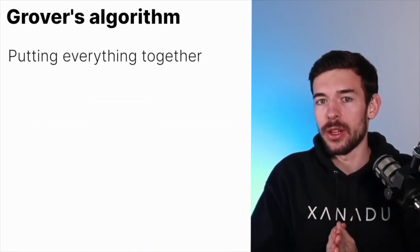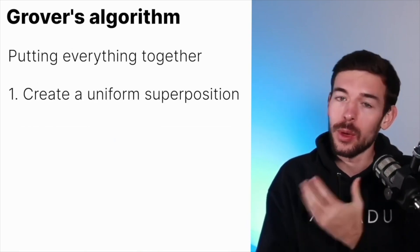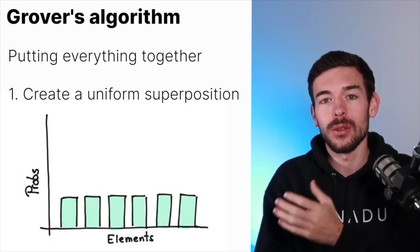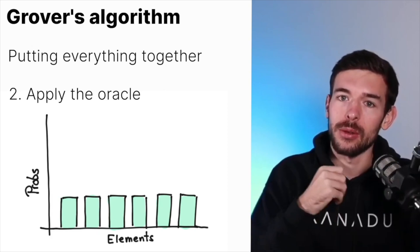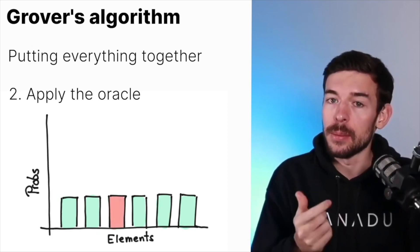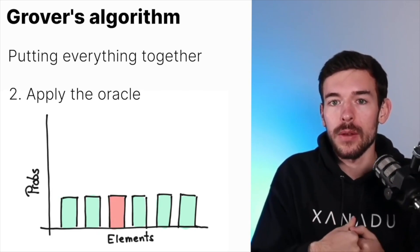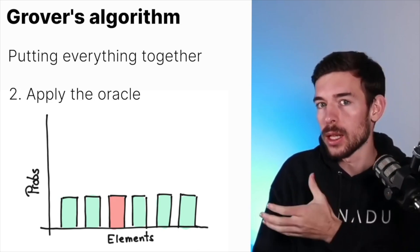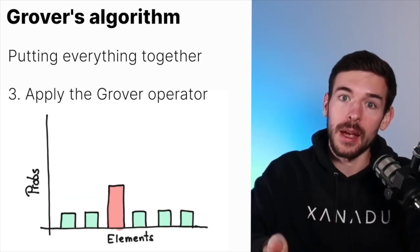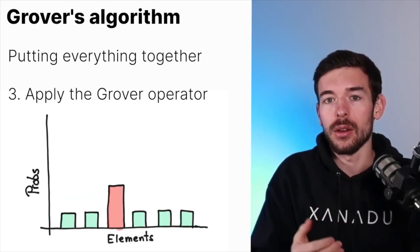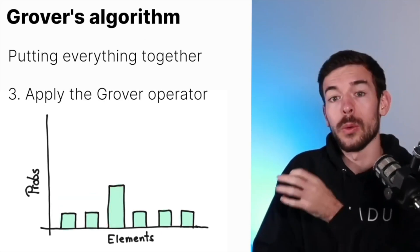And let's put now everything together. Step number one, we create this equal superposition of all the elements. Step number two, we apply the oracle. In that case, we are going to flip the sign of the elements that we are looking for, and we are going to represent these states in red. Step three, we are going to amplify these elements with the Grover operator, so the final solution will be something like that.